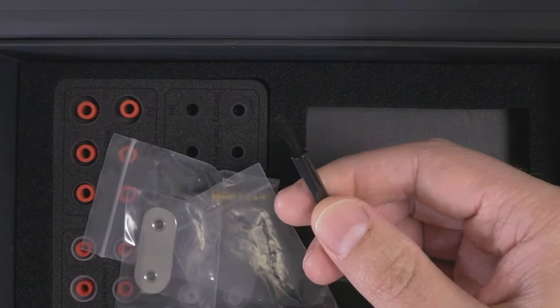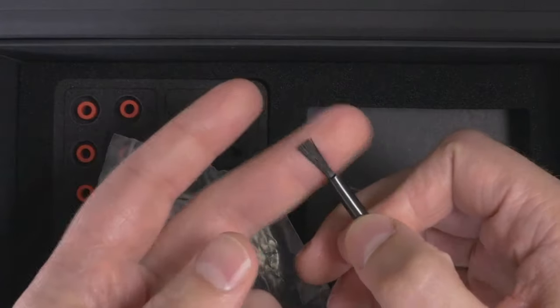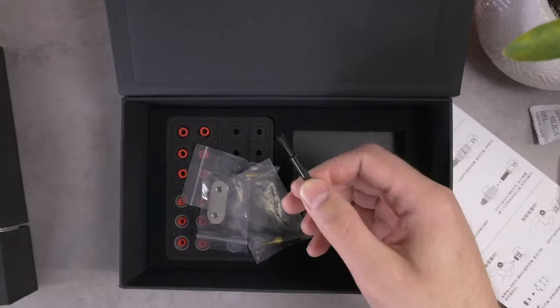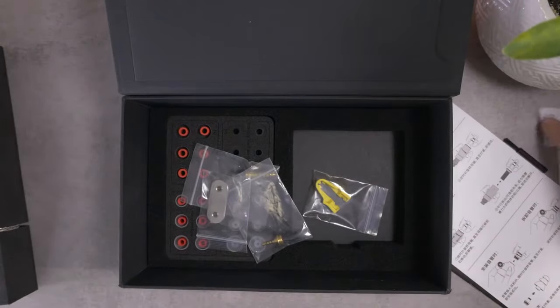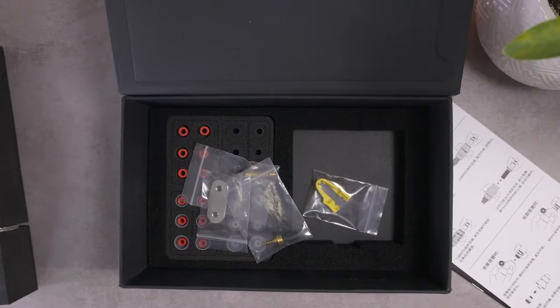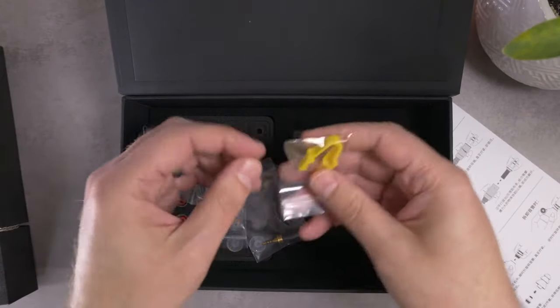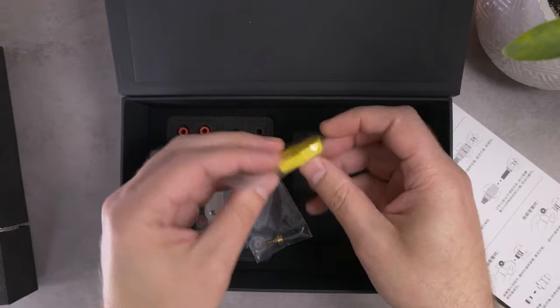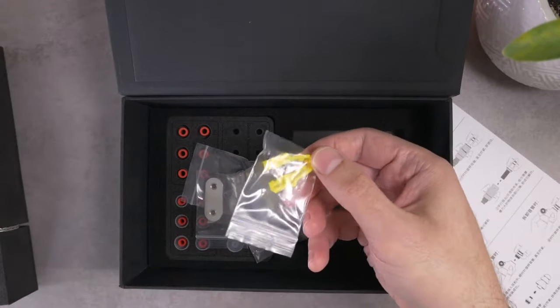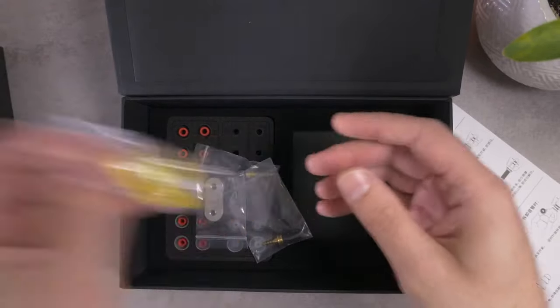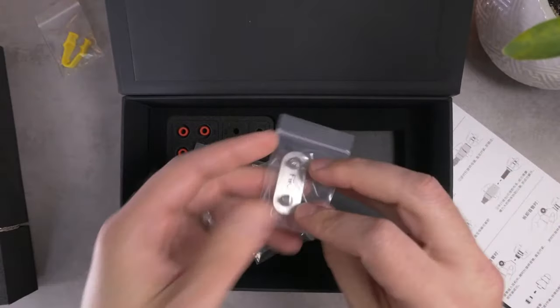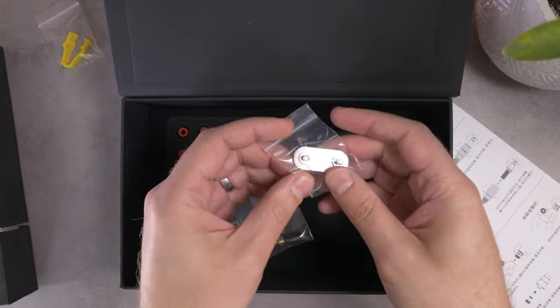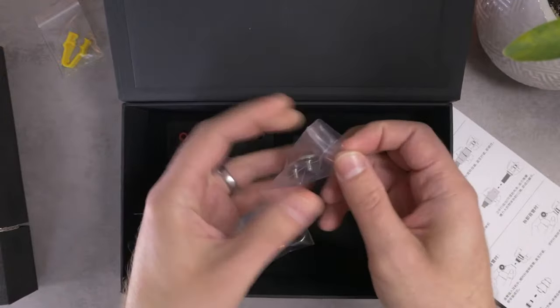Of course, with any earphone priced above $200, you expect to get a toothbrush. So it's nice that Fiio has obliged there. You do also get a tool that is used to make it easier to remove the tips or the nozzles.